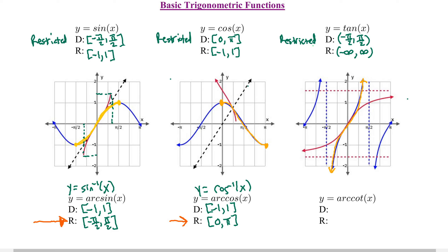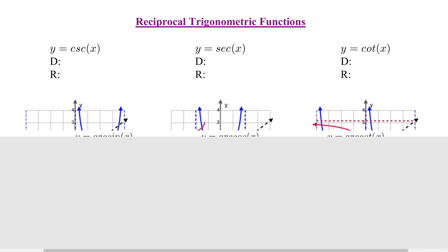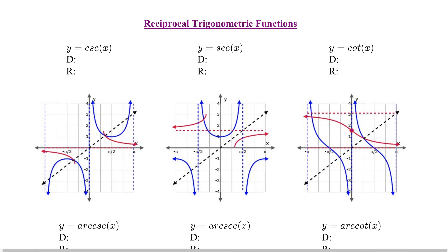The range of the yellow branch of tangent is negative infinity to infinity. Reflecting it across y equals x gives the red curve, which is arc tangent or inverse tangent. The domain of arc tangent is negative infinity to infinity, and the range is the restricted domain of ordinary tangent. You need a working knowledge of these ranges to properly evaluate inverse trig functions. These graphs can all be generated with a graphing calculator in radian mode.